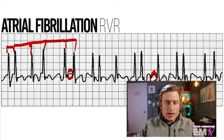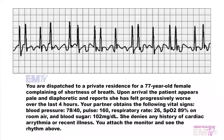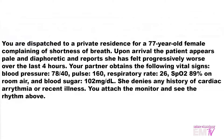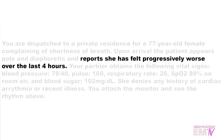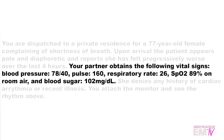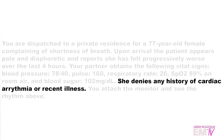Now let's go ahead and take a look at the actual scenario and determine whether or not this patient is stable or unstable. So we're dispatched to a private residence for a 77-year-old female complaining of shortness of breath. She reports that she's felt progressively worse over the last four hours. Your partner obtains the following vital signs: blood pressure 78 over 40, pulse 160, respiratory rate 26, SpO2 89% on room air, and a blood sugar of 102. She denies any history of cardiac arrhythmia or recent illness.